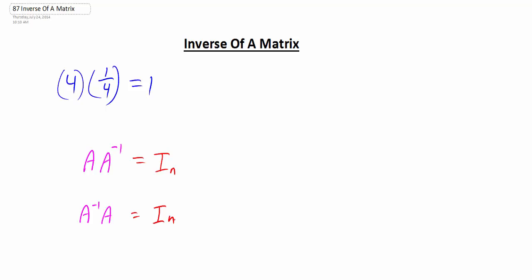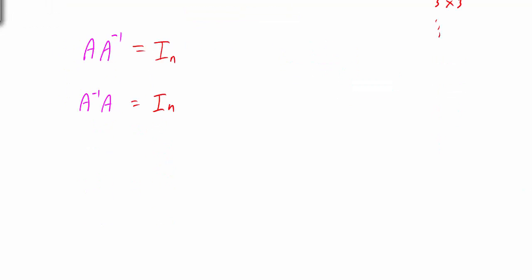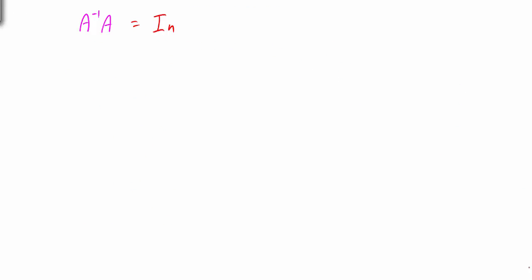When you find the inverse of a matrix, your matrix must be square — in other words, a 2 by 2, 3 by 3, 4 by 4, and so on. So let's look at an example of how we can go about finding the inverse of our matrix.